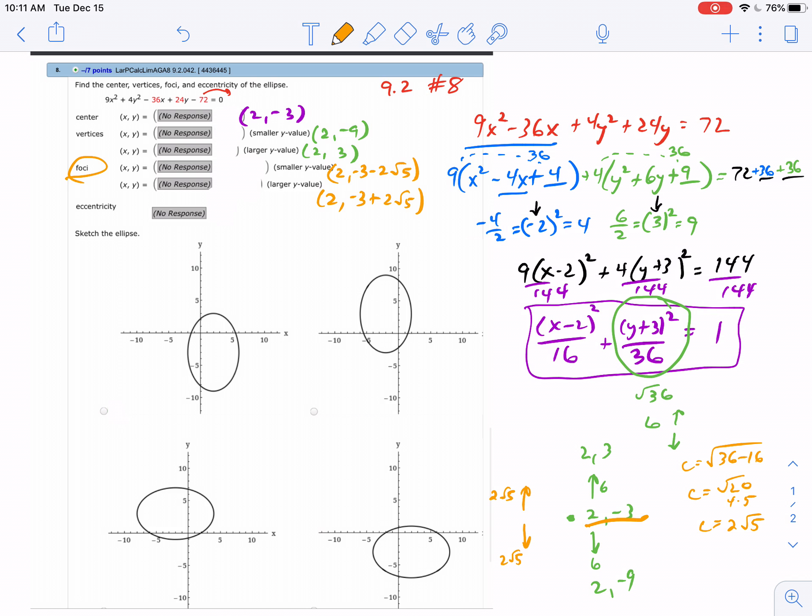The eccentricity is c over a. My c value is 2√5 (or √20), and the a value is the distance you're moving up and down on the major axis, which is 6. If you reduce, you get √5 over 3.